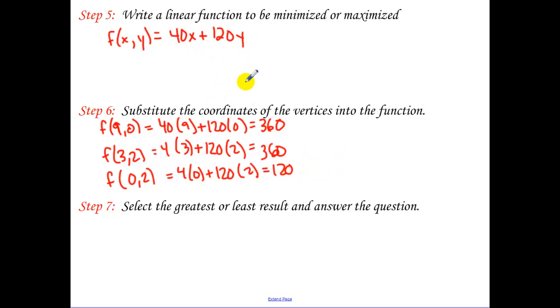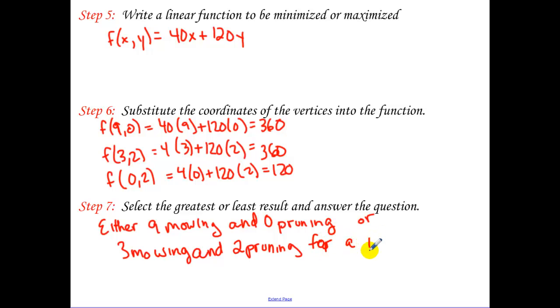We don't bother plugging in zero, zero because that would result in this equation being zero. Remember, I was looking for our maximum profit. To figure out the maximum profit, which one of these numbers is the largest? Well, we actually have two answers. Either nine, remember x was mowing, and zero pruning. Or three mowing and two pruning for a profit of $360.